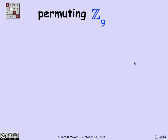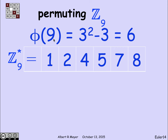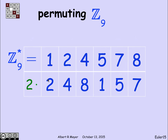Let's look at an example. Suppose I look at Z9. These are the six integers relatively prime to 9 in the interval from 0 to 8: and we can double-check by noting phi of 9 is 3 squared minus 3, which is 6. Now let's pick one element and multiply through. If I multiply by 2: 2 times 1 is 2, 2 times 2 is 4, 2 times 4 is 8, 2 times 5 is 10 which is 1 in Z9, 2 times 7 is 14 which is 5 in Z9, 2 times 8 is 16 which is 7 in Z9. This row is the same as the top row, just in a different order.